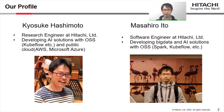I'm Masahiro Ito. I work at Hitachi as a software engineer. I'm responsible for leveraging open source software related to big data and AI. I'm developing big data and AI solutions for customers who are going to build enterprise systems.